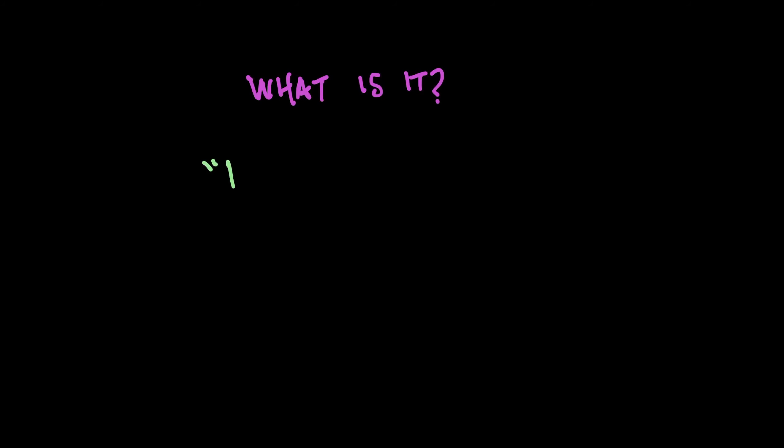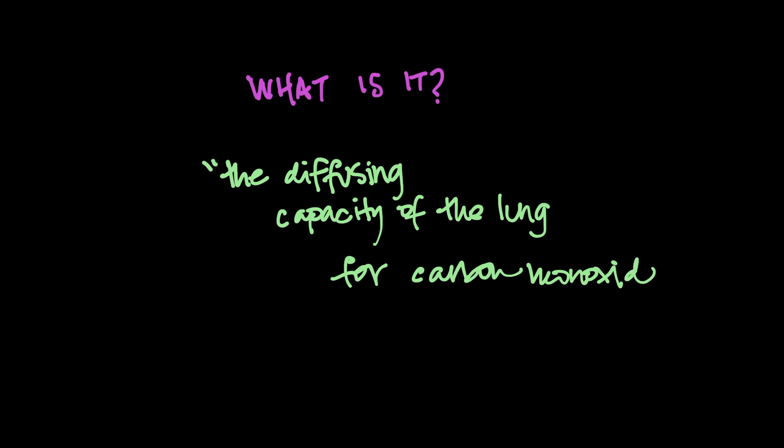Hey guys, it's Meredith again, and today we're going to talk about the D-L-C-O. So what does that mean? What it stands for is the diffusing capacity of the lung for carbon monoxide. So that's what the D, the L, the C, and the O stand for.